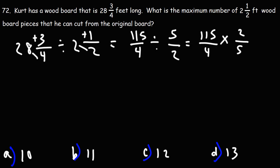Now we can multiply across, but notice that 2 and 4, 2 is a common factor of 4, and 5 is a common factor of 115. So for this problem, it's easier if we simplify first.